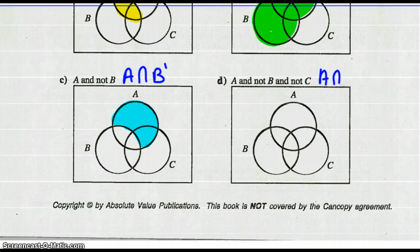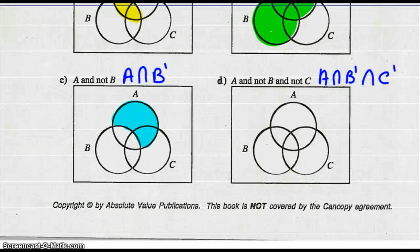And finally, A intersect not B intersect not C. It's very similar to Part C except we're also excluding C. So we want all of A that is not part of B and not part of C.